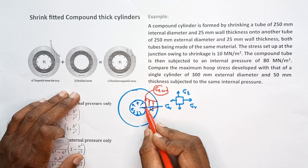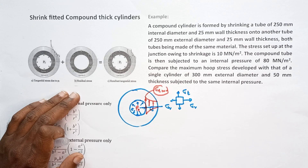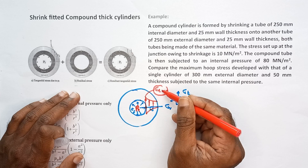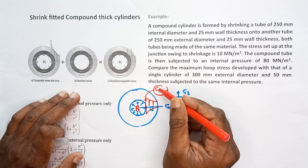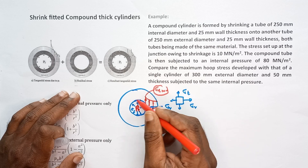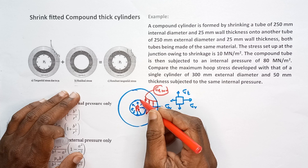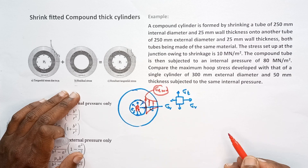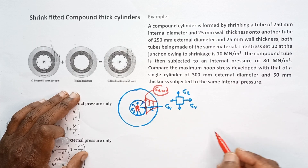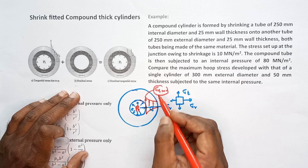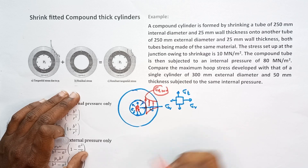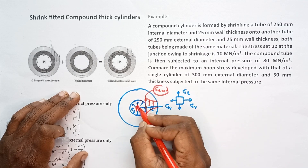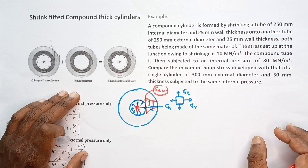Sigma T is the principal stress acting on the inner surface. When increasing the pressure, sigma T increases. If it increases beyond the yield point of the material, cracks may generate at the inner surface and failure may occur. So limiting and reducing sigma T is very important when this kind of cylinder is subjected to higher internal pressure.